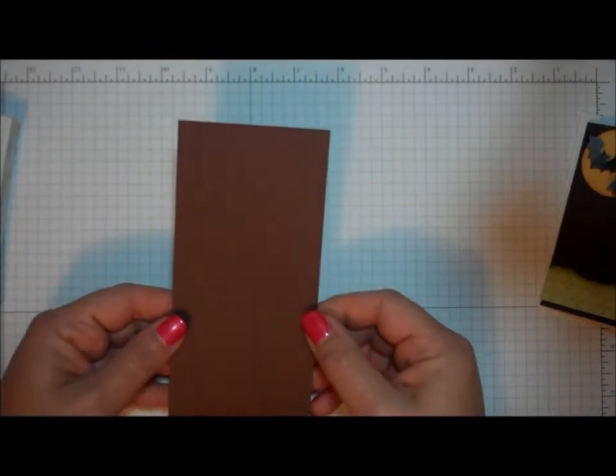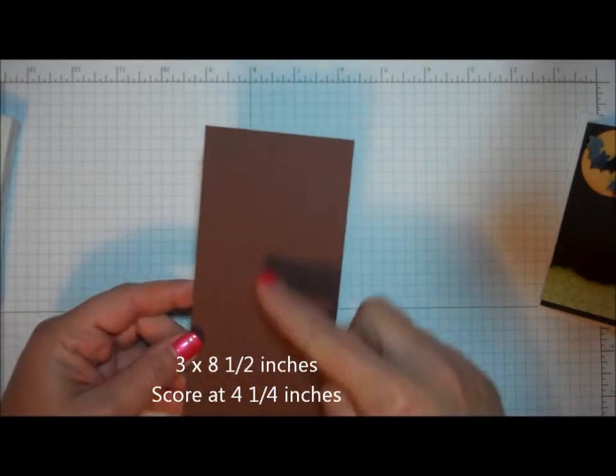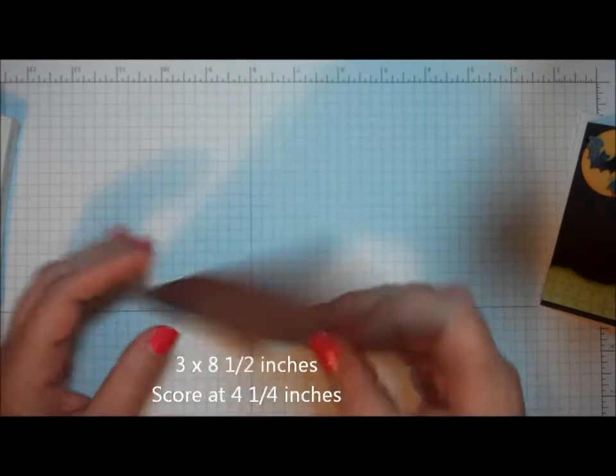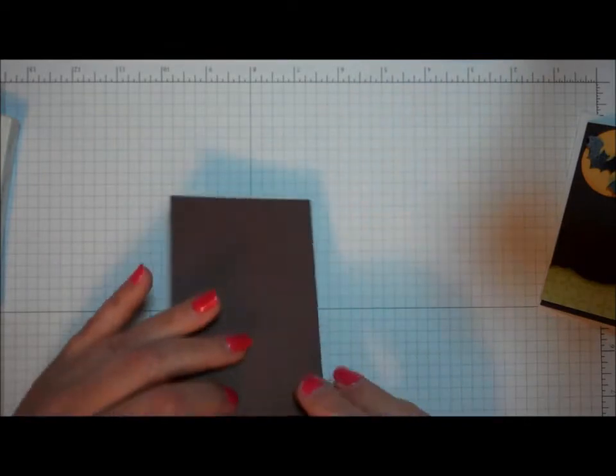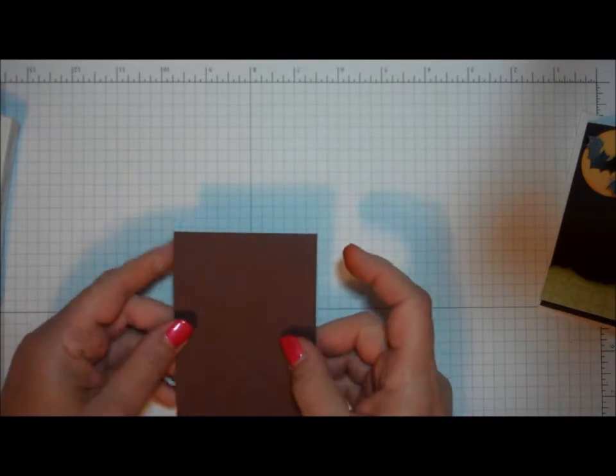First I started out with a piece of brown cardstock that measures 3 inches wide by 8 and 1/2 inches long and I scored it at 4 and 1/4 and I'm going to fold that in half to make my base card. I'm just going to fold along the score line. I'm going to set that aside.